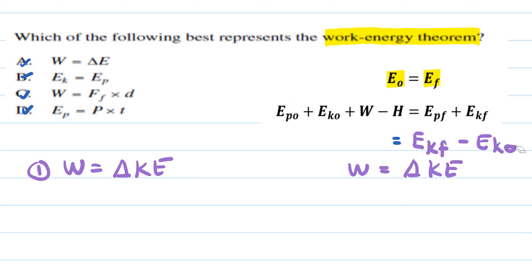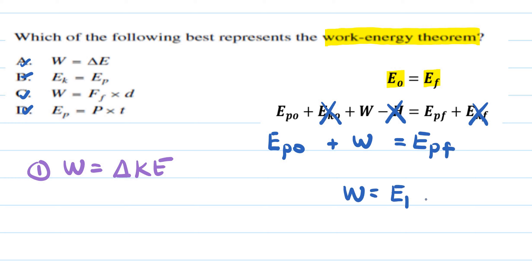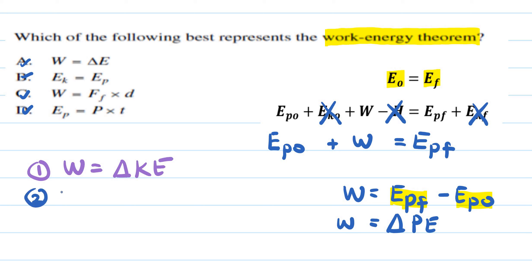In another scenario where there is no kinetic energy at the beginning or end and no friction, we have: PE_initial + Work = PE_final. Solving for work gives Work = PE_final minus PE_initial, which is a change in potential energy (ΔPE). So work is also related to a change in potential energy.